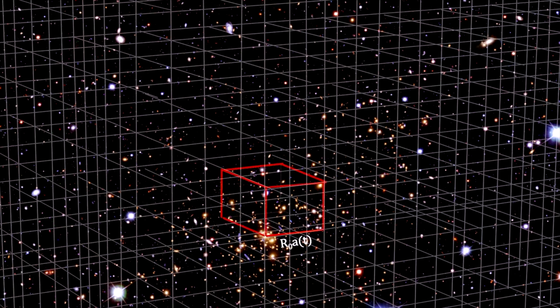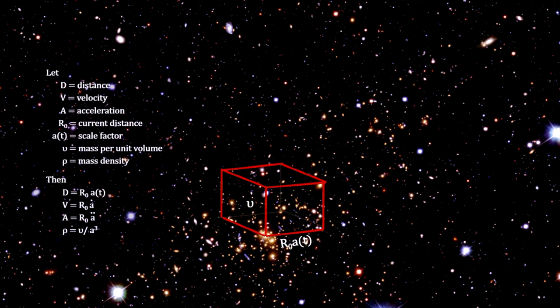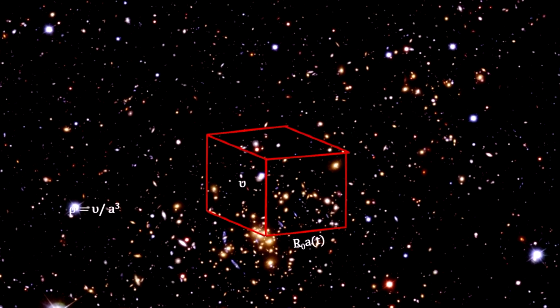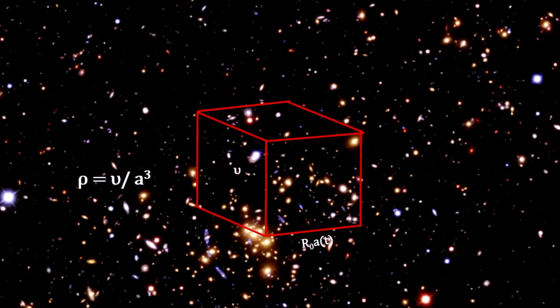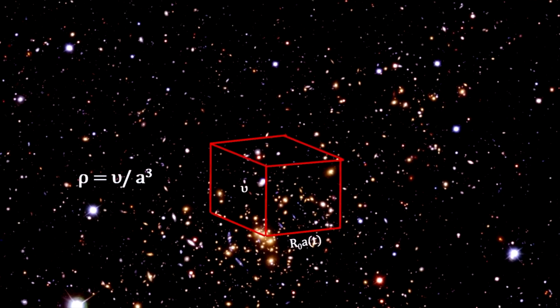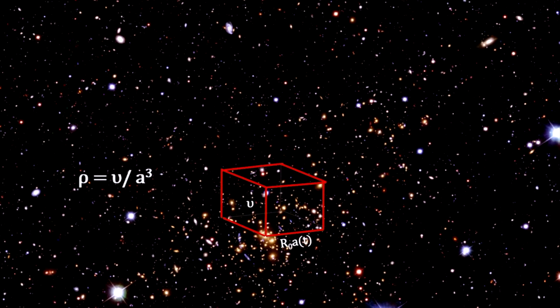Now consider a cube enclosing a volume of space containing some number of galaxies. With our scale factor approach, the amount of matter inside the volume remains the same as the volume increases or decreases, but the matter density goes down when the scale factor increases, and it goes up when the scale factor decreases. We see that the matter density depends on the scale factor.